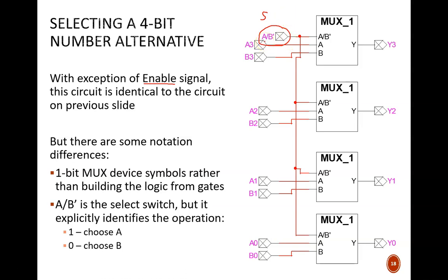However, a more explicit name is A slash B prime. The slash in the name indicates that this is a control switch. Through it, we can choose either the first operation or the second. And the placement of the prime tells us what a 1 or 0 would accomplish. Here, the prime is next to B, so 0 selects B, and 1 selects A.